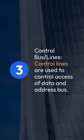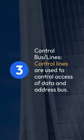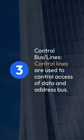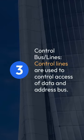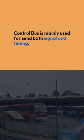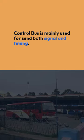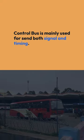Third, control bus lines. Control lines are used to control access of the data and address bus. Control bus is mainly used for sending both signal and timing.